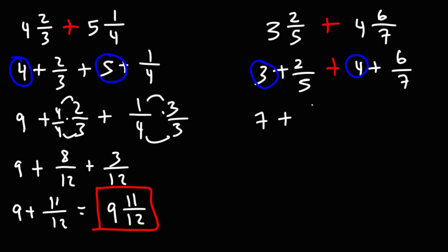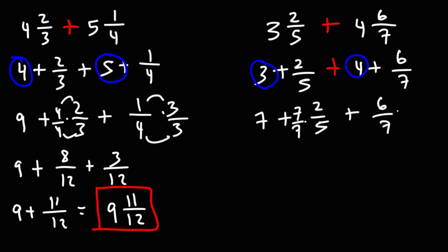And then we can add the fractions 2 over 5 plus 6 over 7. So let's get common denominators. Let's multiply the first fraction using the denominator of the second. So we're going to multiply it by 7 over 7. And the second fraction, we're going to use the denominator of the first one to get common denominators.